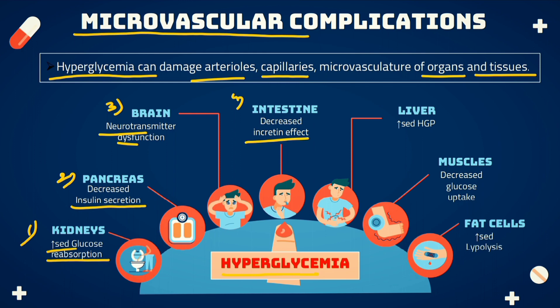The incretin has an inhibitory role in hepatic glucose production by stimulating insulin secretion and inhibiting glucagon secretion. When there is a decrease in incretin level, this causes an increase in blood glucose level and ultimately hyperglycemia. The fifth mechanism is an increase in hepatic glucose production, which also enhances the level of glucose.